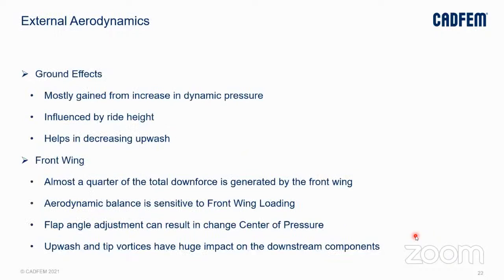In this presentation, we will restrict our discussion to external aerodynamics of race cars. Ground effect was initially brought to Formula 1 by the Lotus team and Colin Chapman. It used almost the entirety of the car's body to generate downforce and is highly influenced by ride height — the height difference between the road and the car's underbody — and helps in decreasing the upwash generated by the front wing's downforce. In traditional airfoils used for airplanes, downwash occurs as airfoils generate lift. But in race cars, the front wing is an inverted airfoil, so instead of downwash, upwash is generated, which could reduce the effective angle of attack for downstream objects.